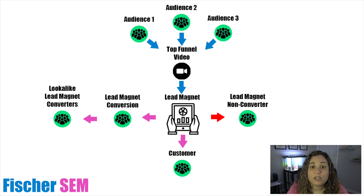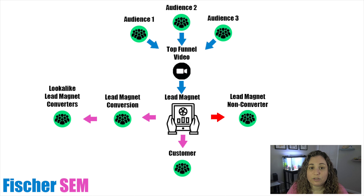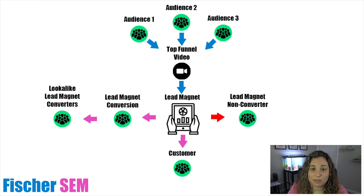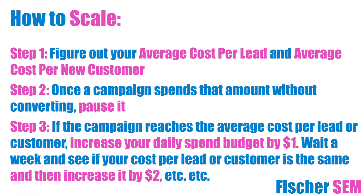Here's what it looks like using the examples that we went over in the previous video. As these audiences fill up, you will want to focus on reaching more people like them. With the Google Ads funnels, you will want to start increasing your budget for the campaigns that are generating leads and eventually paying customers. This is why I recommend breaking out each video into their own campaign. Once you figure out how much your average cost per lead and average cost per new customer is, once a campaign spends that amount without converting, pause it.